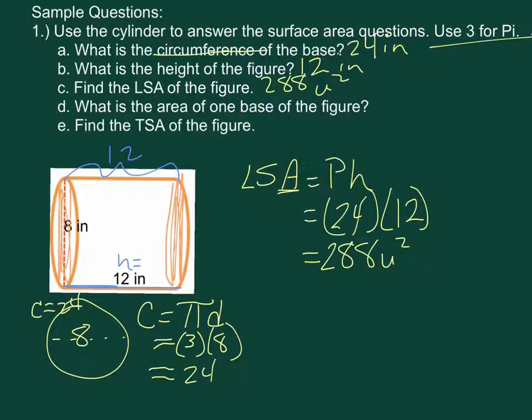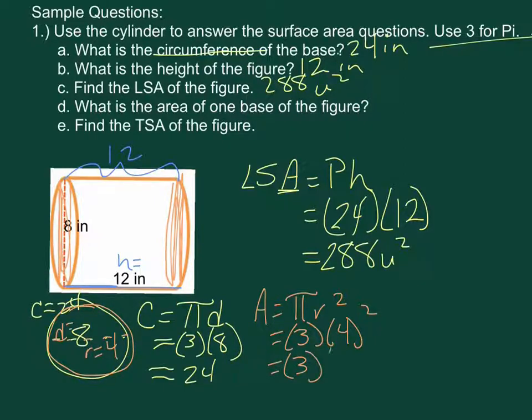What is the area of one base? Okay, so here's our circle again, and here is our diameter. So if our diameter is 8, that means our radius is 4. So to find the area of a circle, it's pi r squared equals, again we're going to estimate with the 3 times 4 squared, so 3 times 16 is 48, so that gives us one of our bases. So area of one base is 48 inches squared.